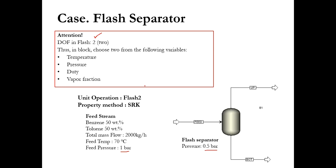There are four options available in the flash separator: temperature, pressure, duty, and vapor fraction. Out of these four parameters, you have to specify two. One of the parameters we have been given is pressure, and the other parameter will be the same as the feed temperature.